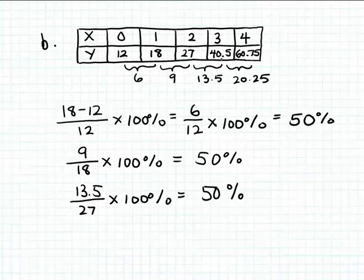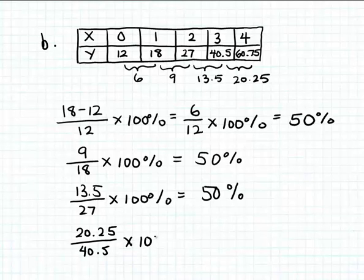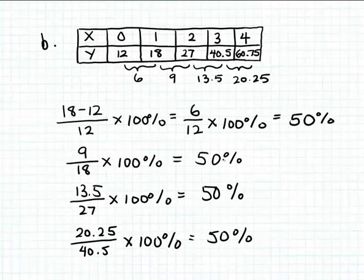The last percent change is 60.75 minus 40.5, which gives a change of 20.25, divided by 40.5, times 100%. When you simplify this, it also equals 50%. So the change in outputs is constant — a constant increase of 50%. As the input increases by one, the output always increases by 50%. The table in part b is an example of an exponential function because it exhibits that key characteristic: the outputs are changing by a steady percentage amount.